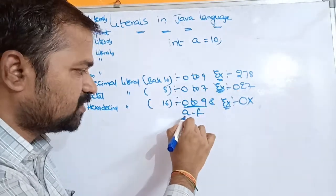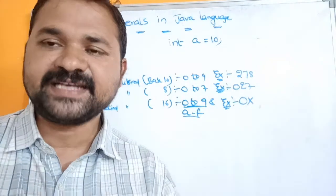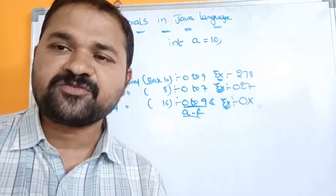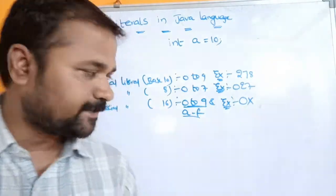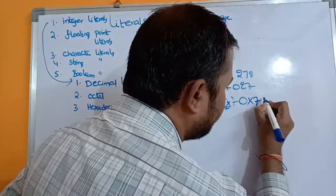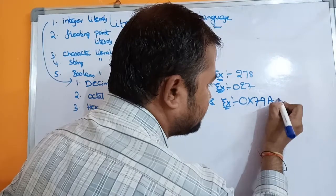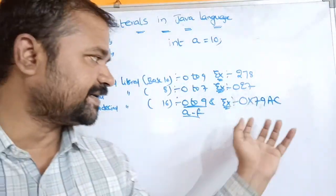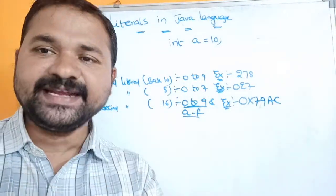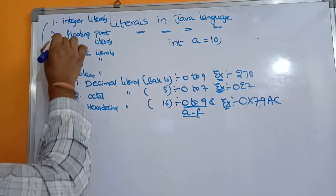In hexadecimal, a to f represents values 10 to 15 — so a means 10, b means 11, and f means 15. For example, 0x79ac is a hexadecimal literal. This concludes integer literals; now let's move to the second type.